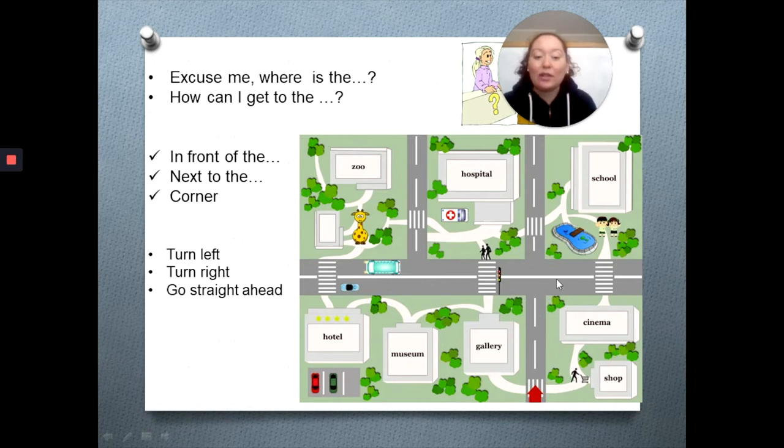La esquina. Cuando se cruzan dos calles, una intersección, vamos a encontrarnos con cuatro esquinas. Y acá tenemos las palabras que nos indican cómo llegar. Turn left, girar a la izquierda. Turn right, girar a la derecha. Go straight ahead, ir recto.